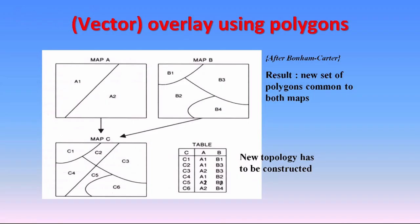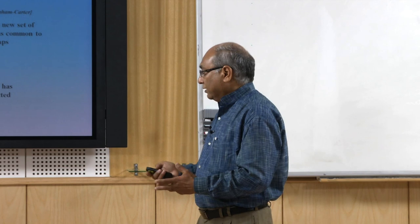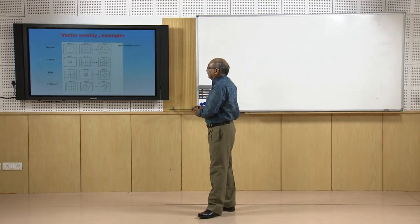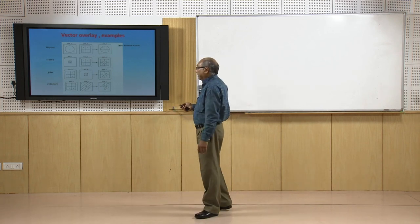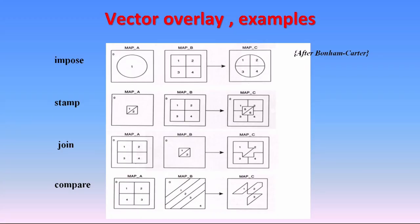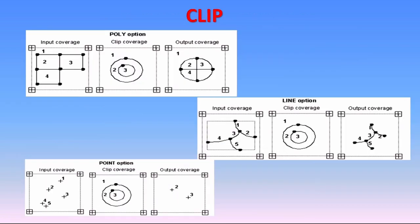With vector overlay, the attribute table gets appended. For example, map A with 2 units and map B with 4 units will produce more polygons, enriching your attribute table. You can then classify or reclassify your map, reduce the number of polygons, and make sensible interpretations. There are also offshoots of the basic four Boolean logical functions, such as impose, stamp, join, compare, and the commonly used clip or extract function.